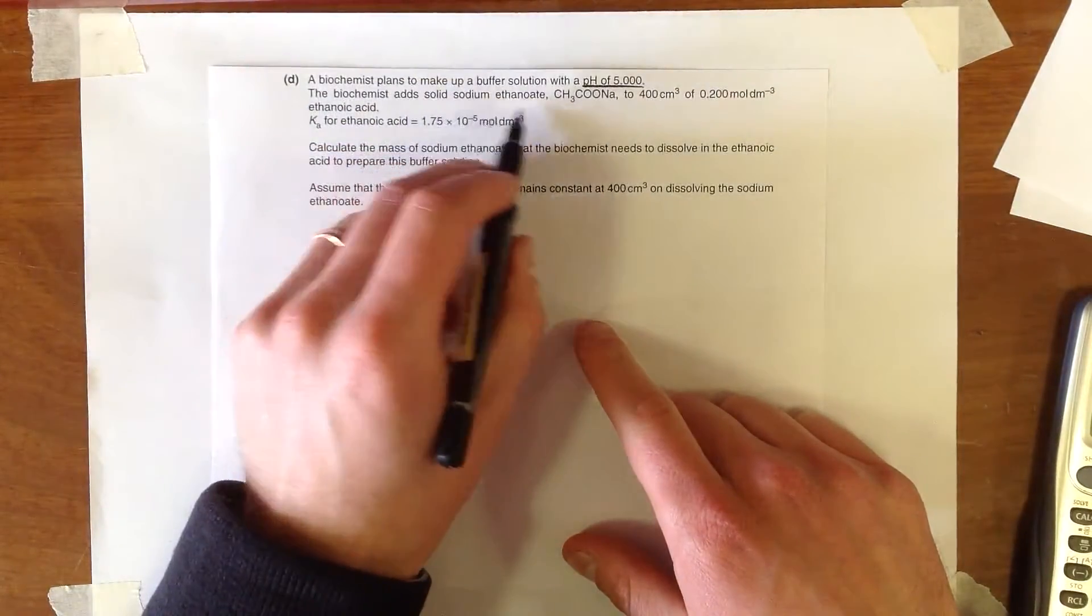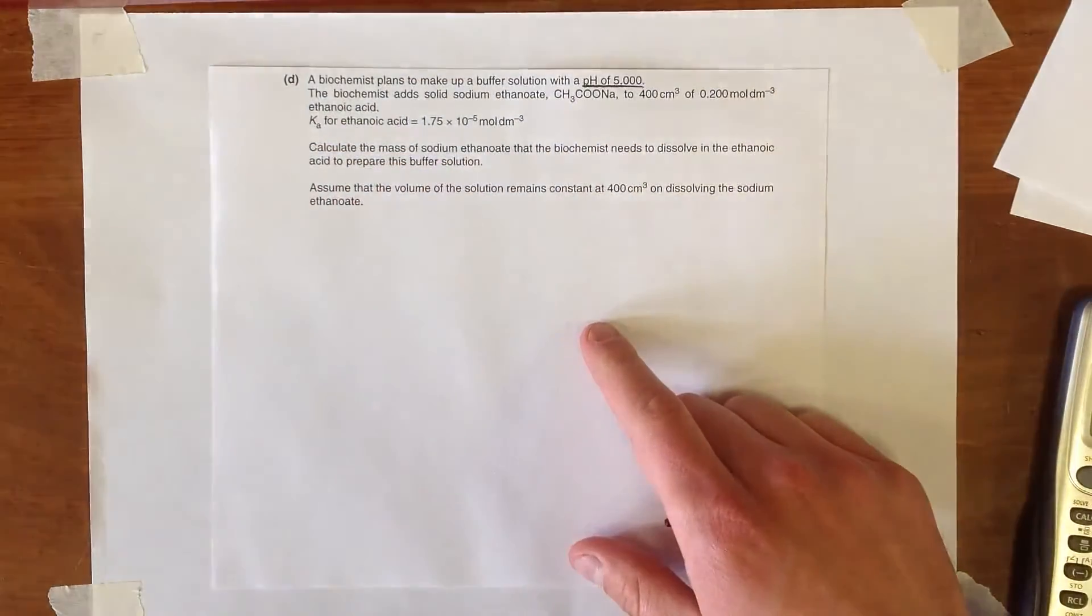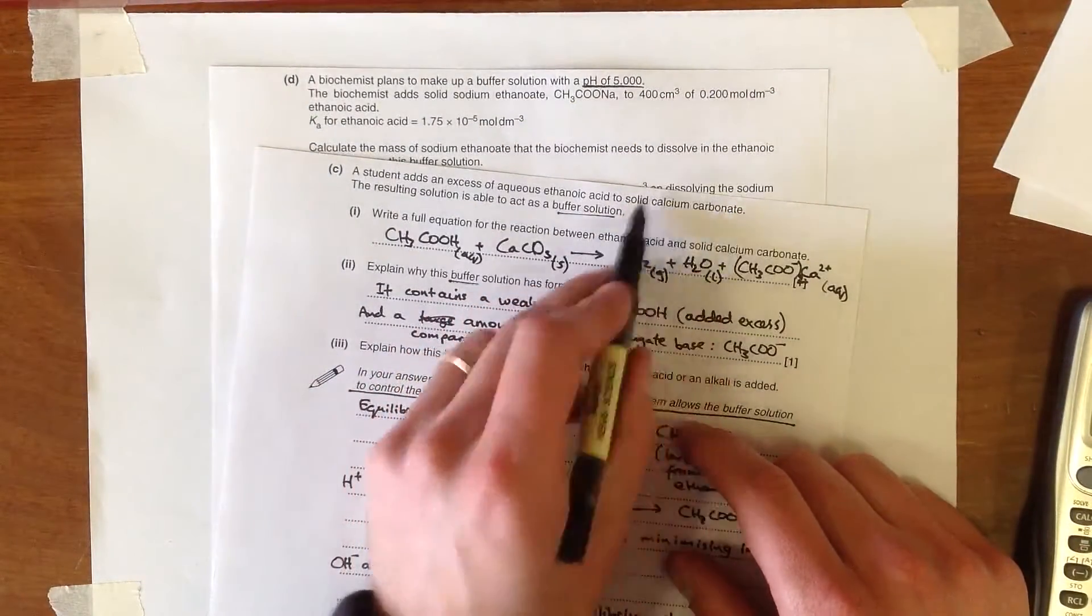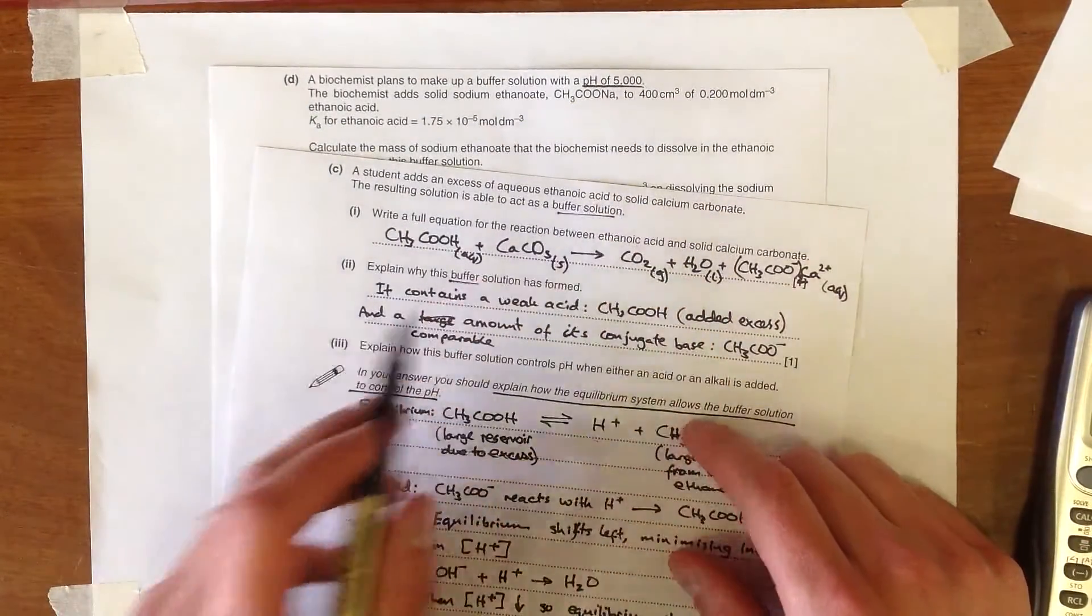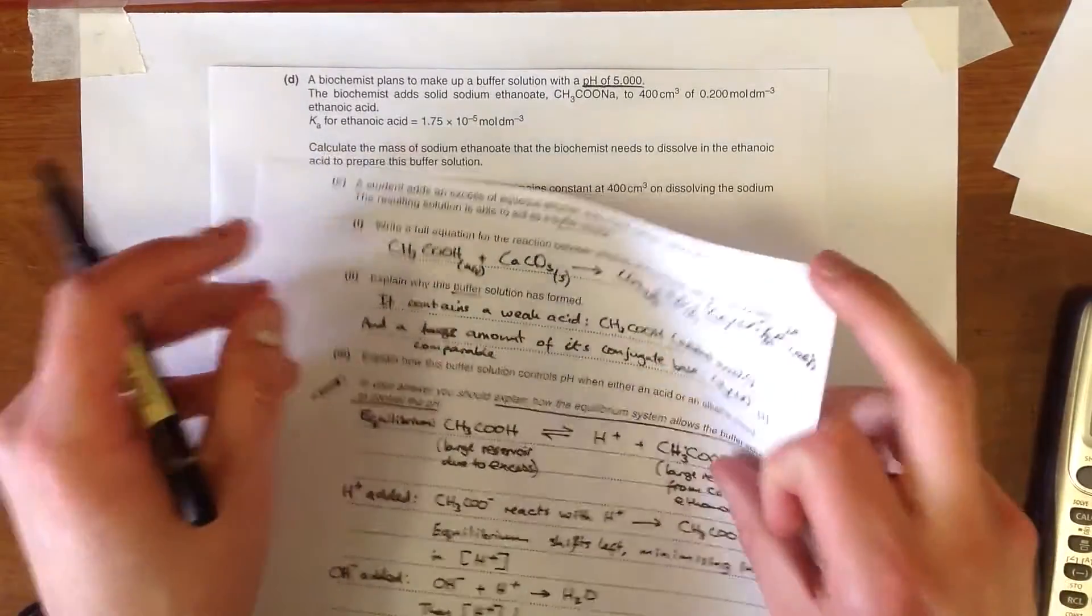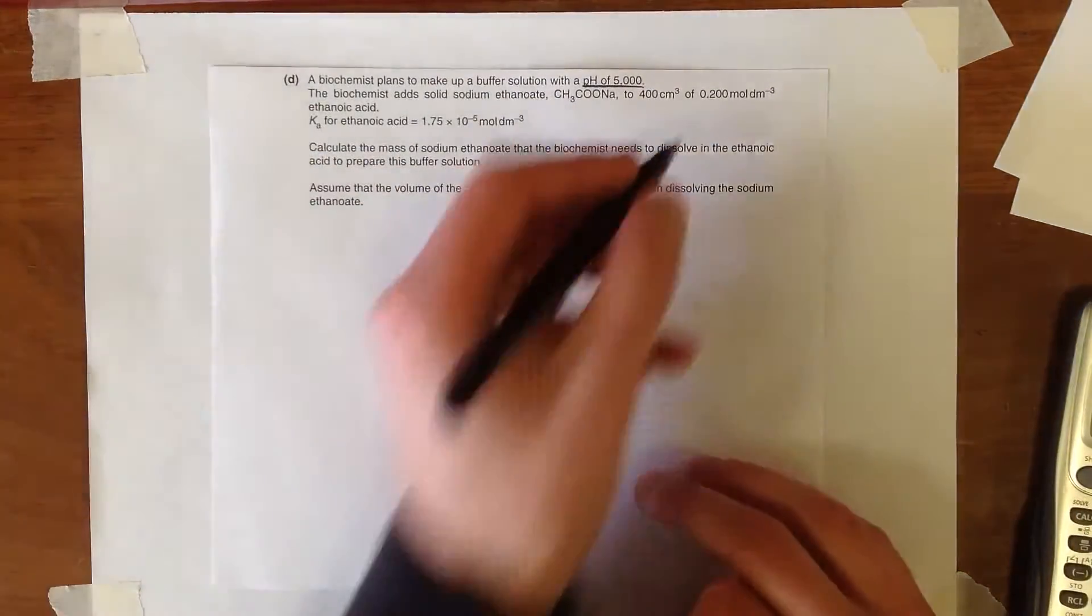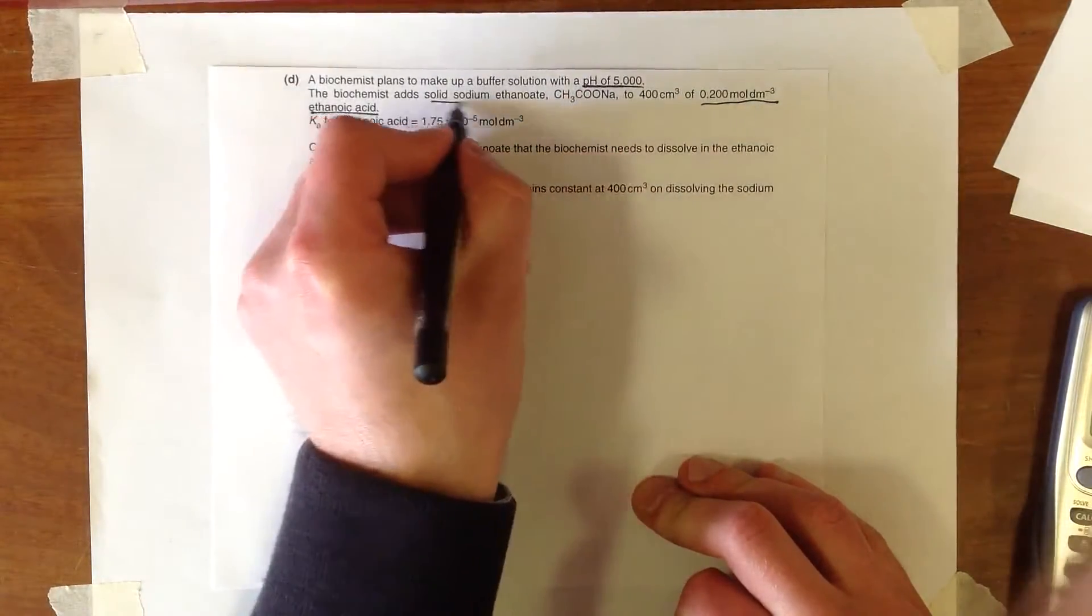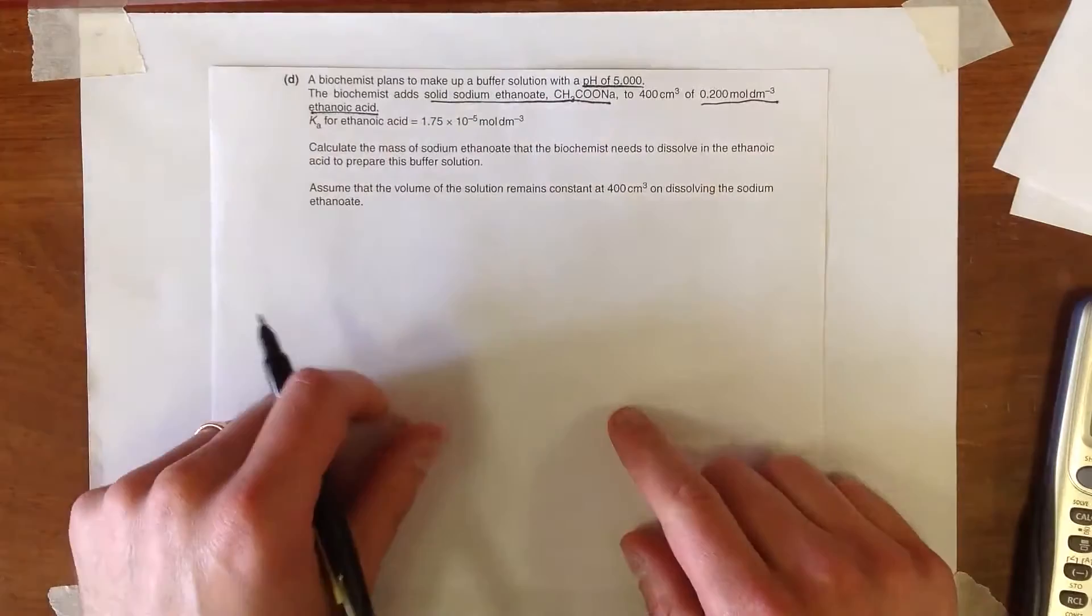Biochemists are adding solid sodium ethanoate, so rather than the last part of the question where they were partially neutralising the calcium carbonate by the ethanoic acid, this time what we've got is ethanoic acid and solid sodium ethanoate. It's a different way of making a buffer, we've got to be careful about that.